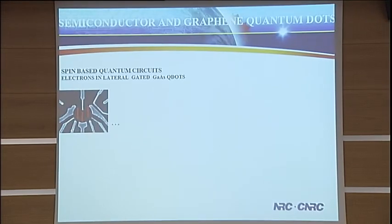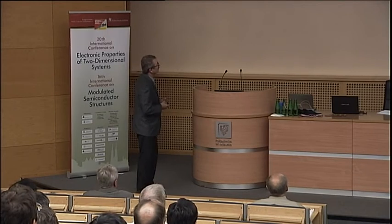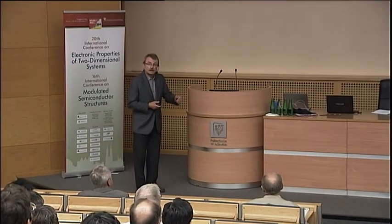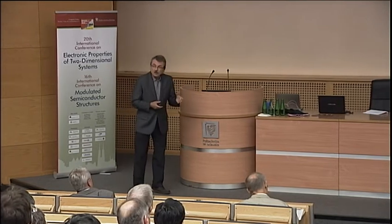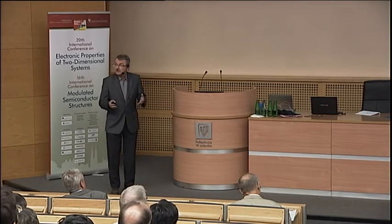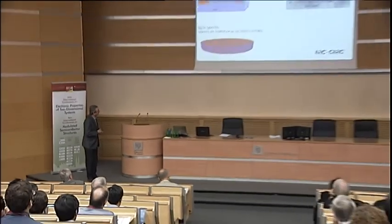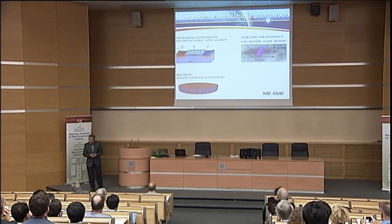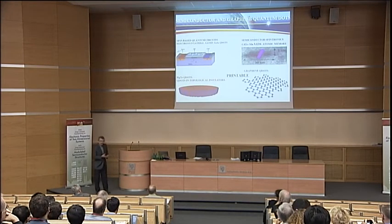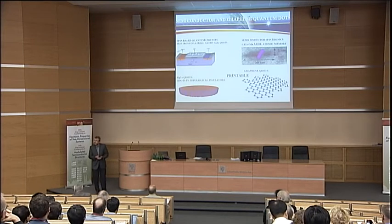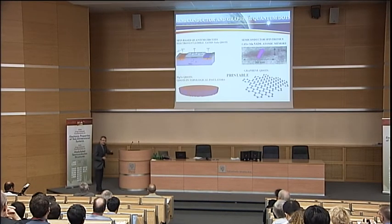Sergei Studenikin gave a beautiful talk a couple of days ago on localizing electrons in gated structures. I would like to talk a little bit about where we can take this capability in the future. I want to talk about quantum dots with single magnetic ions as model systems for single atom memory or semiconductor spintronics. Then I will move to topological quantum dots in topological insulators and hopefully spend quite a bit of time on graphene quantum dots, because graphene quantum dots are also materials for printable electronics, which is a very large and growing field.